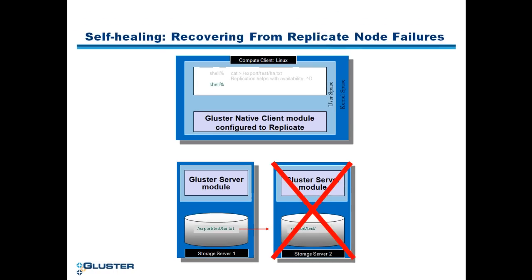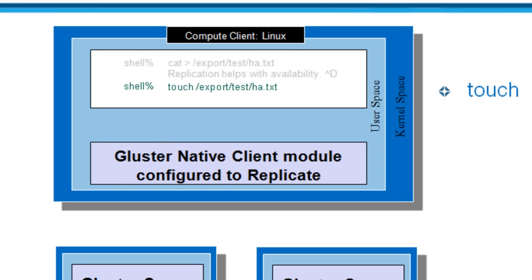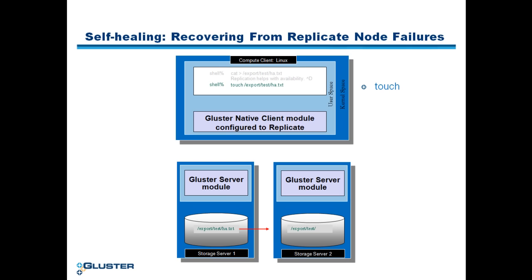Now let us look at self-healing, which is triggered after the system has recovered from the fault and upon next access to the file. I am executing a touch operation on the file ha.txt. The touch command will go to the Gluster native client. Under the hood, the touch command is actually executed as two operations — lookup and write — which together will update the last access time of the file.